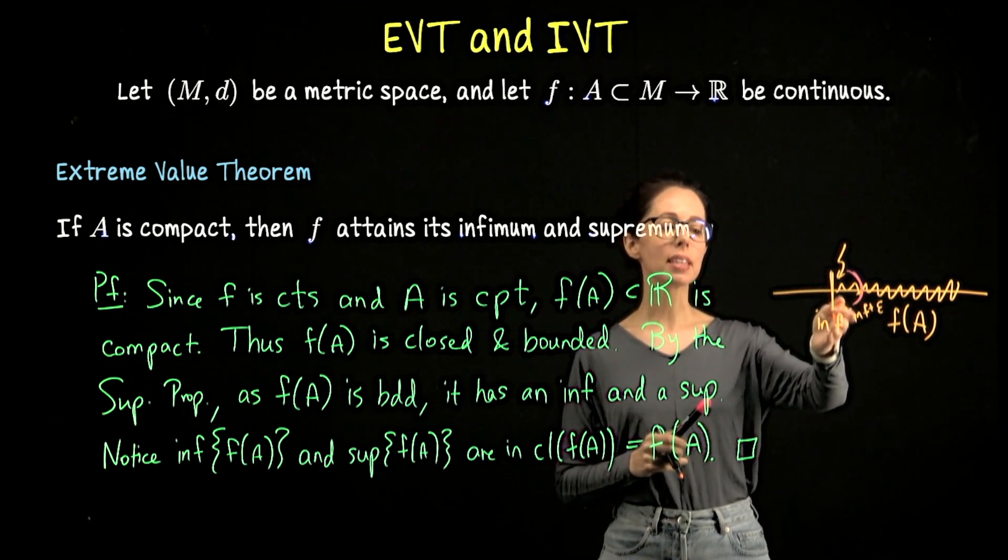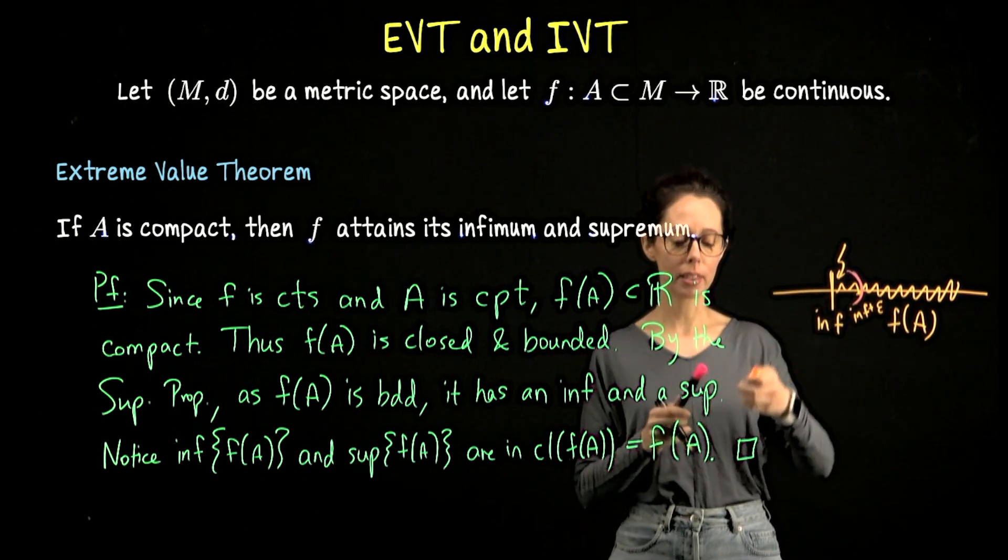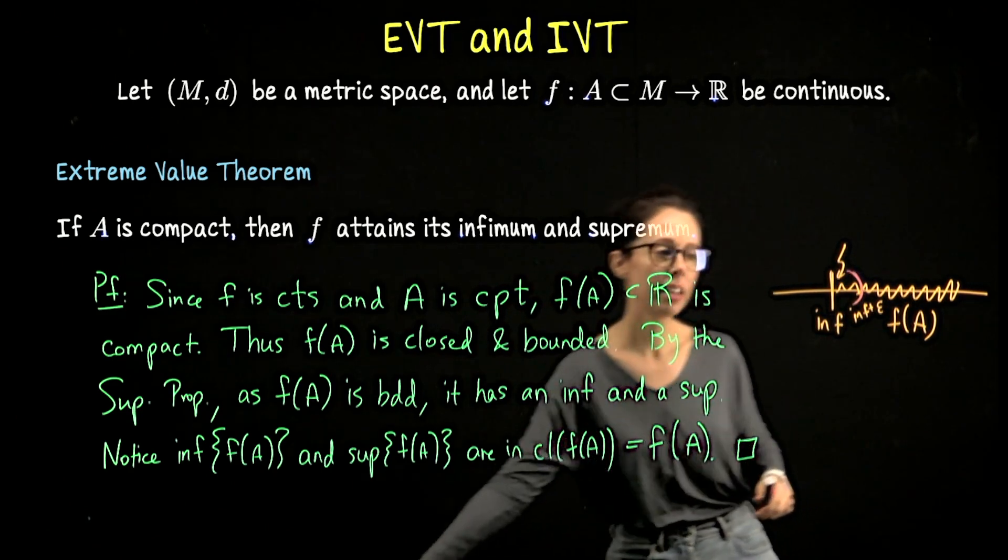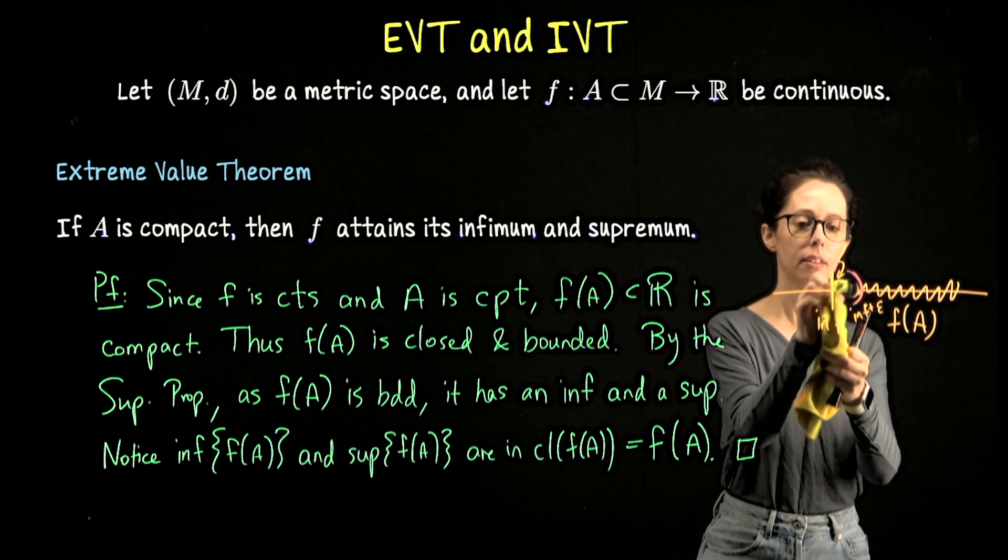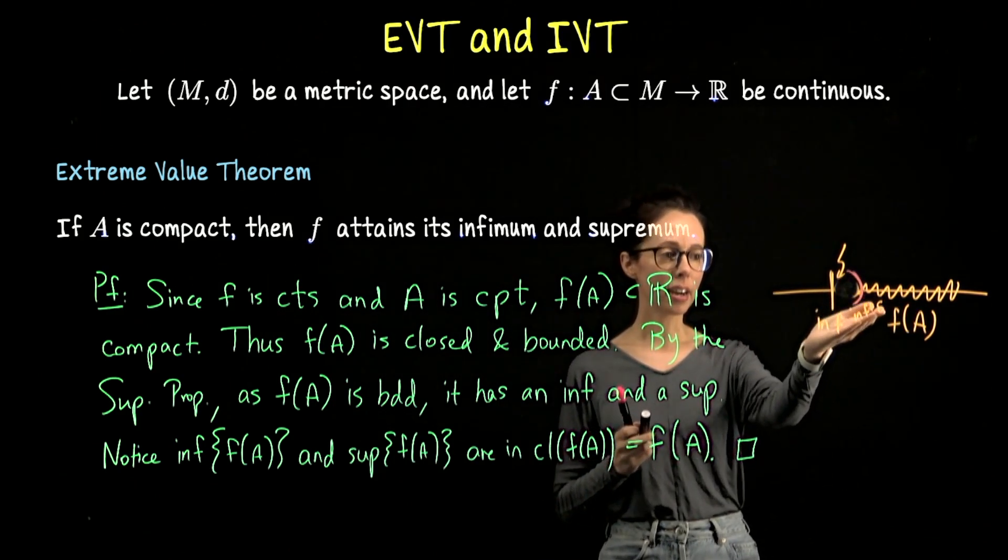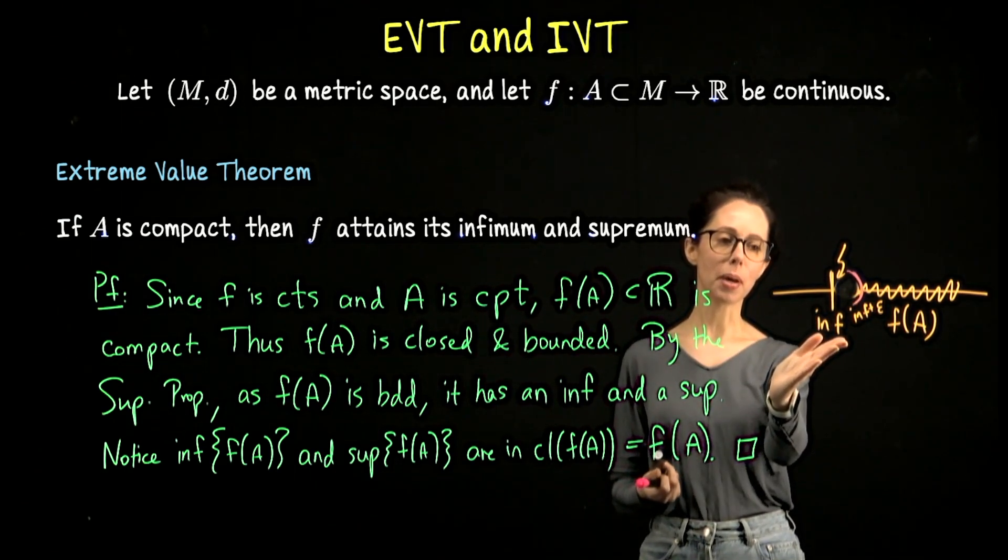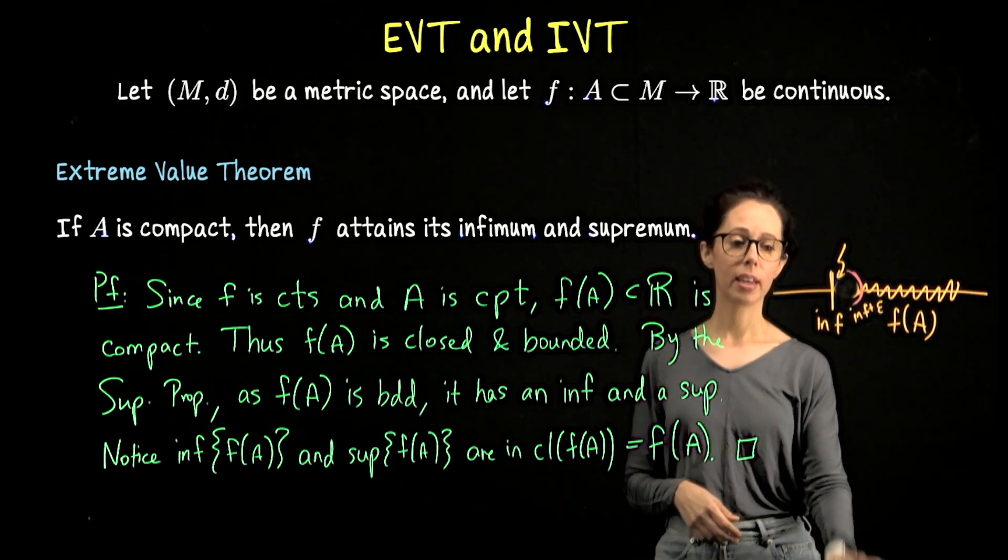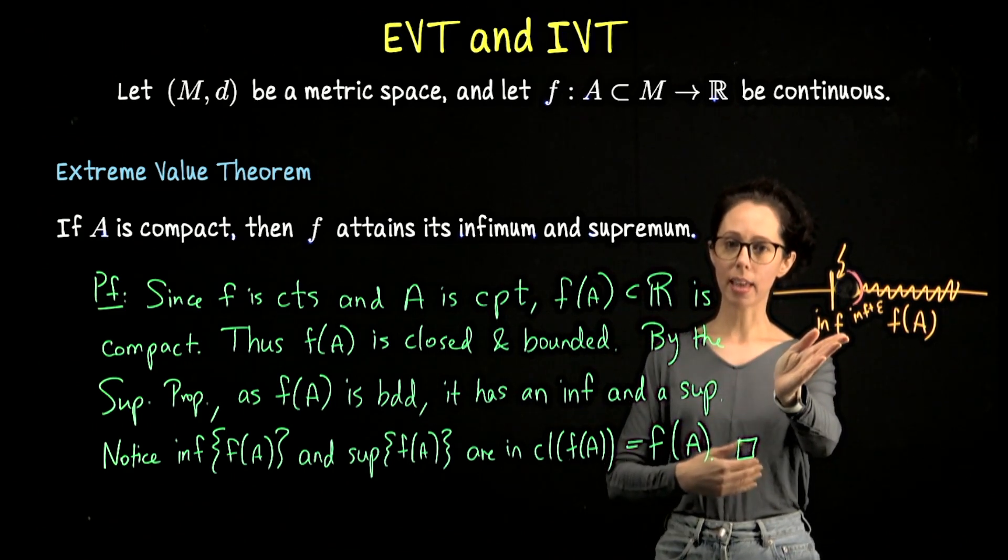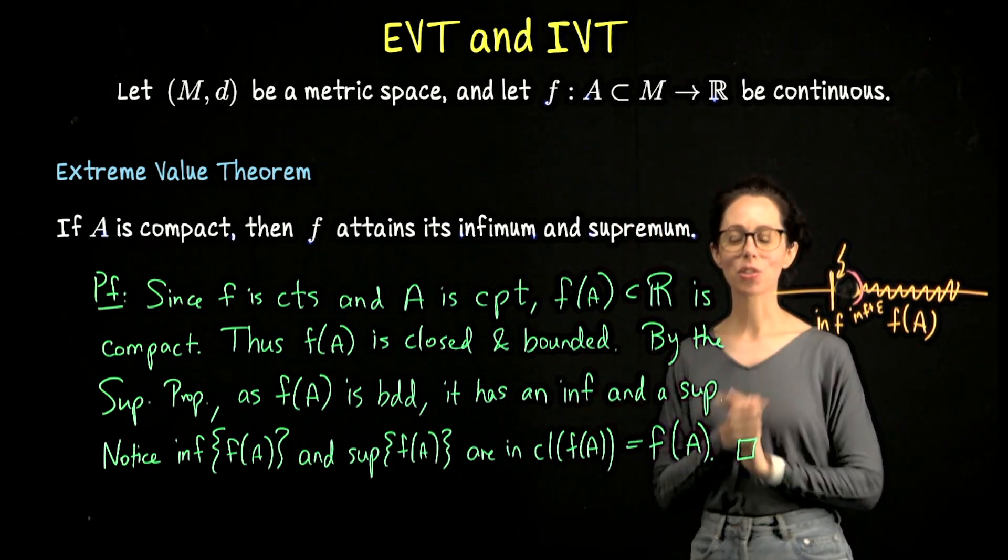What I'm saying is if the infimum of a set is not in the set, as soon as you step a little bit to the right, you have to pick up a point from the set. Otherwise there would be a greater lower bound. If nothing from the set was in here, if no element from f(A) could be found in here, then the infimum plus epsilon would be a greater lower bound, contradicting the fact that the infimum is the infimum. So if the infimum is not in a set, it's an accumulation point of the set. It's either in the set or it's an accumulation point. That's exactly what it needs to be in the closure of a set.